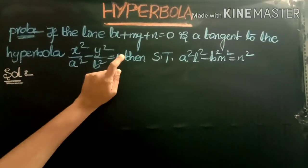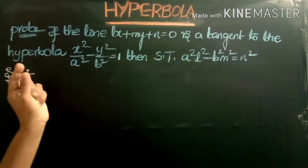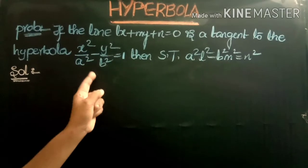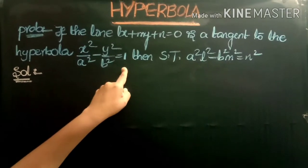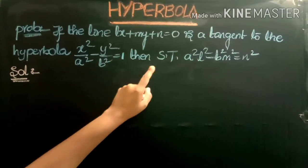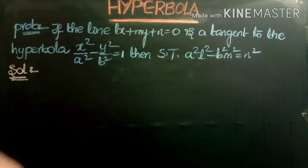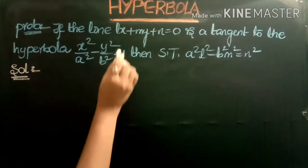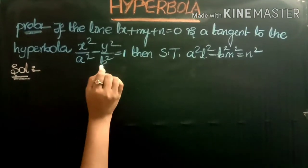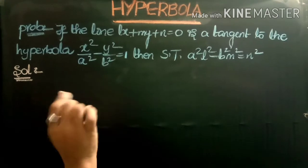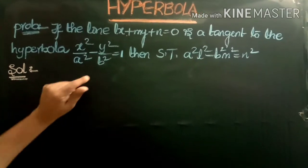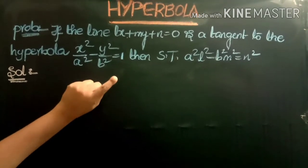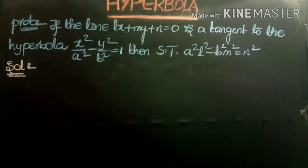Next problem: If the line lx plus my plus n equals 0 is a tangent to the hyperbola x squared by a squared minus y squared by b squared equals 1, then show that a squared l squared minus b squared m squared equals n squared. We apply the same tangency condition c squared equals a squared m squared minus b squared.